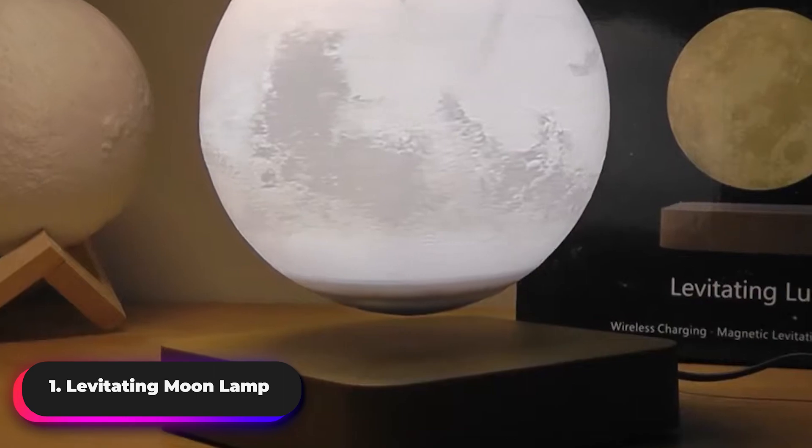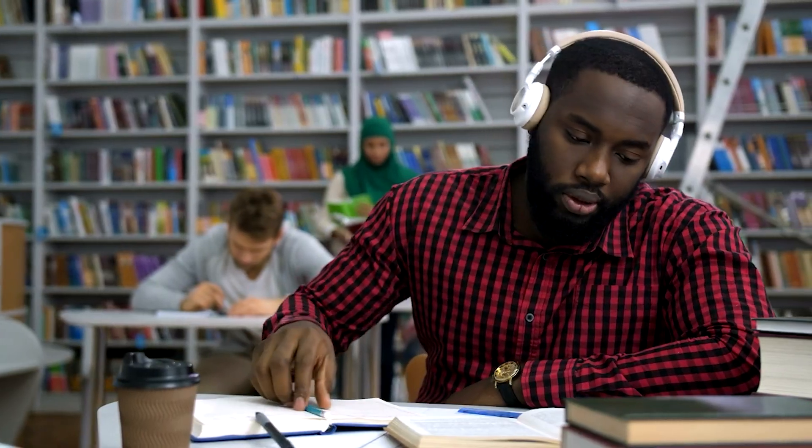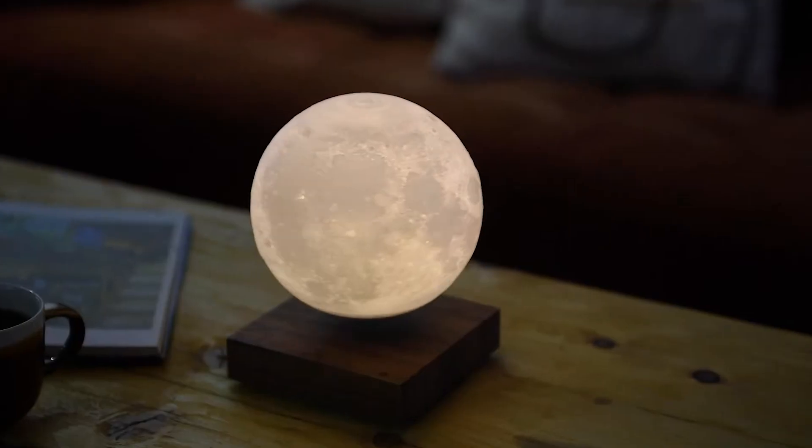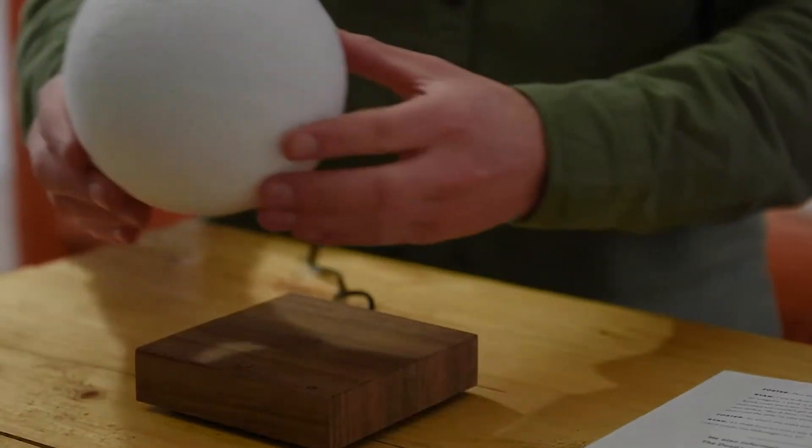Levitating Moonlamp. Are you the type of person that still listens to interstellar music in the background while working? What if we gave you something that reminded you of the universe and left you speechless every time your eyelids felt heavy? It's the levitating moonlight, which not only changes color from pale yellow to white to create the effect but also wirelessly charges.